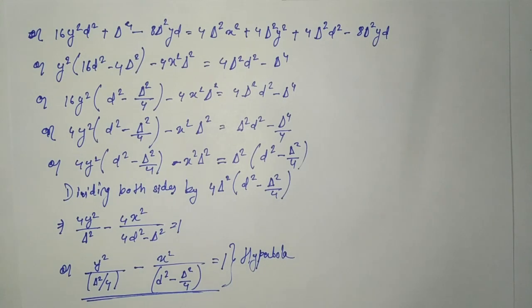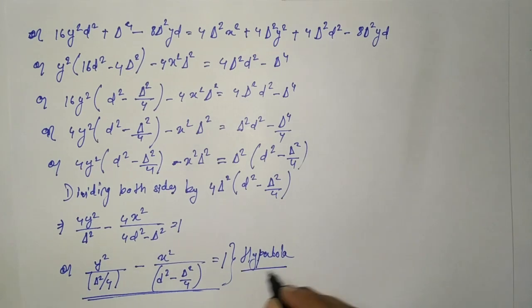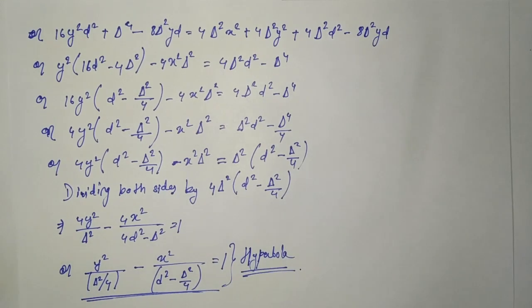Therefore, the shapes of the interference fringes obtained in Young's double-slit experiment are hyperbolas. This is an important derivation from the examination point of view.